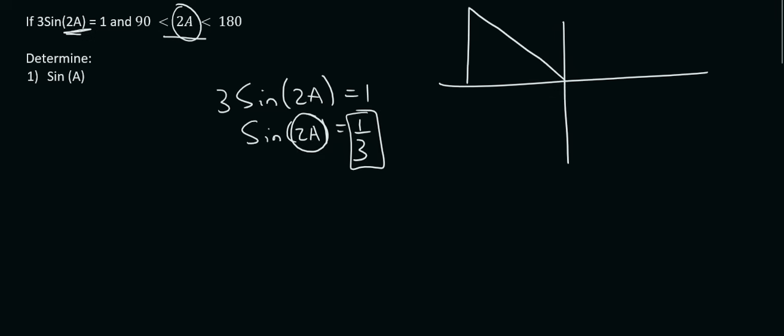Now our angle that we are using is 2A. You don't have to try to remove the 2 or anything like that, that is your angle, 2A. And they tell us that sin, or the ratio, sin 2A is 1 over 3. Now that's opposite over hypotenuse. We can then use Pythagoras to find the missing side. So that's going to give us 3 squared minus 1 squared, which is equal to 8.